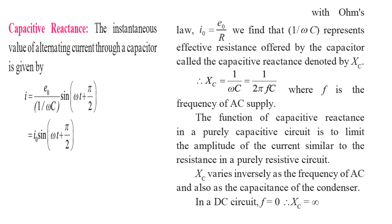This is how we discussed how alternating EMF applied across a pure resistor, pure inductor, and purely capacitive circuit works, and how the values of current and EMF are related to each other. In the next video, we will be talking about AC circuits containing all three elements — that is, the LCR circuit. Thank you.